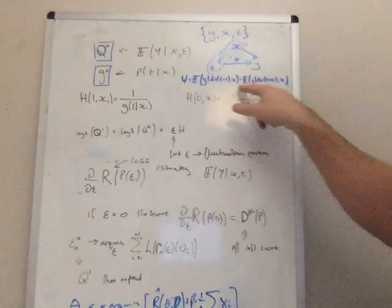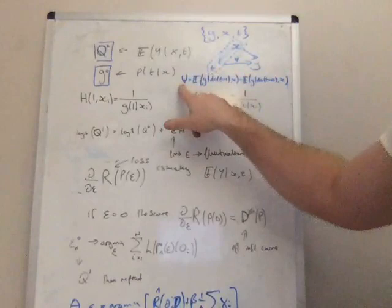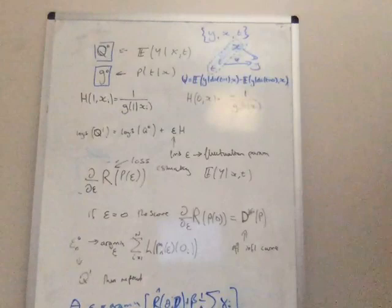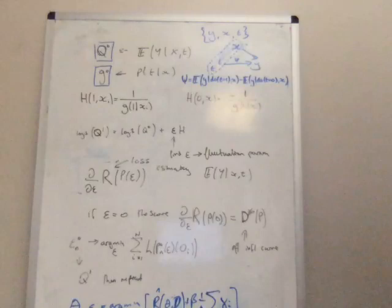you actually get an unbiased and asymptotically efficient estimate for psi, the parameter that you're actually interested in. Now what I wanted to discuss specifically in addition to targeted learning, which I've kind of given you the nuts and bolts here, is how we might consider implementing it in a neural network framework.